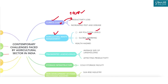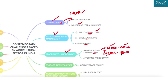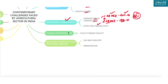Third, fragmented land holdings are a major challenge. The average size of land holdings has come down to 1.08 hectares in 2015–16 from 2.28 hectares in 1970–71, and marginal and small holdings together constitute 86% of total holdings in India. This makes it almost impossible for farmers to invest heavily in infrastructure like drip irrigation or bulk inputs, adversely affecting productivity.